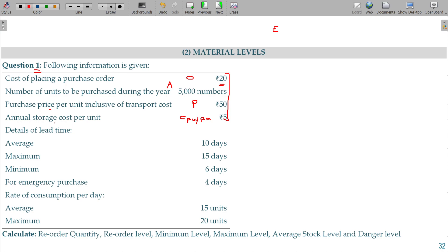So EOQ formula: root of 2AO by C. 2, annual requirement being 5000 units, ordering cost being 20, carrying cost being 5. Then the ultimate value here being 200 units.